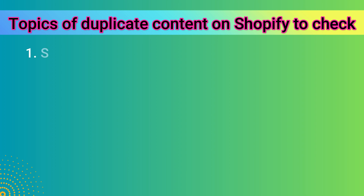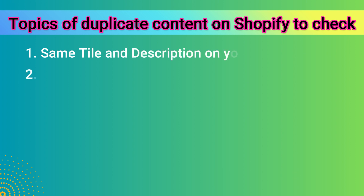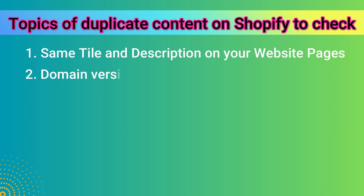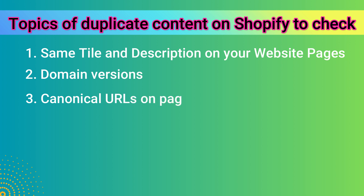You can use the title and description to identify duplicate content. In the website, you can select the duplicate content and assign the canonical tag. You can select 'duplicate without user-selected canonical.' In the URL, you can access the admin panel.